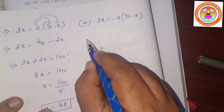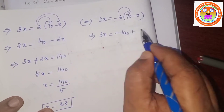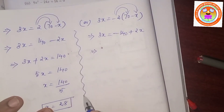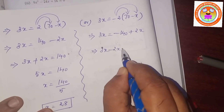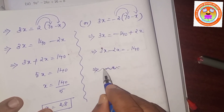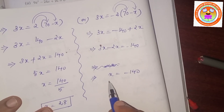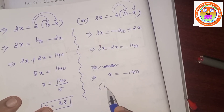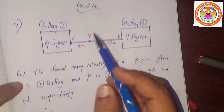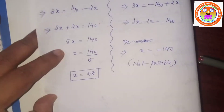Case 2: 3x equals minus 2(70 minus x), giving 3x equals minus 140 plus 2x, so x equals minus 140. Since x represents a distance, distance cannot be negative. Therefore x equals minus 140 is not possible, so x equals 28.